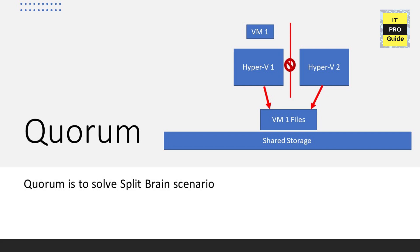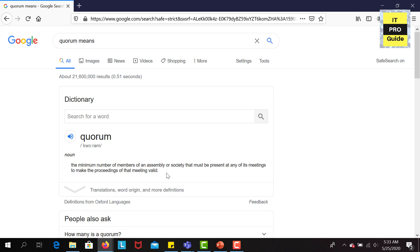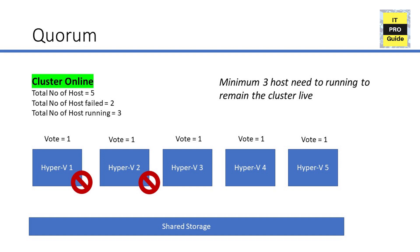Quorum allows Windows Server failover clusters to resolve the split-brain issue. In general, like government assemblies, quorum is defined as the minimum number of members that must be present to make the proceedings valid. In the same sense, each host or node in the cluster has votes, and more than half of the voters must be online and able to communicate with one another to keep the cluster working.